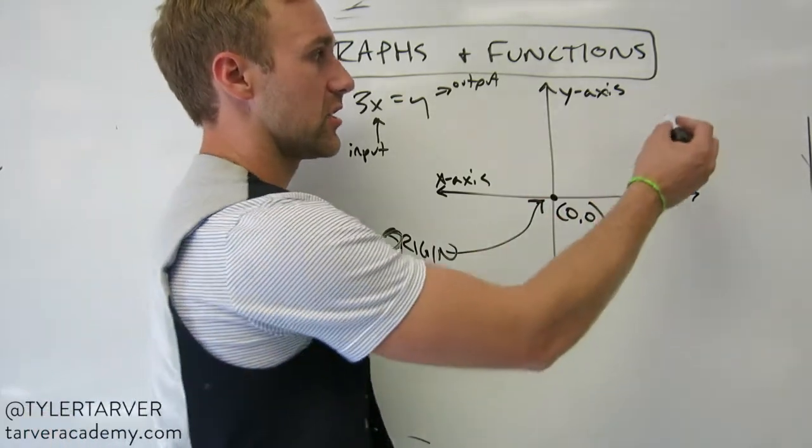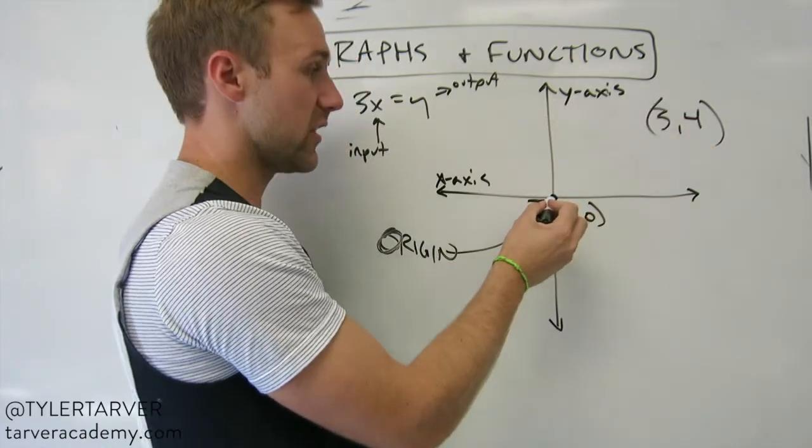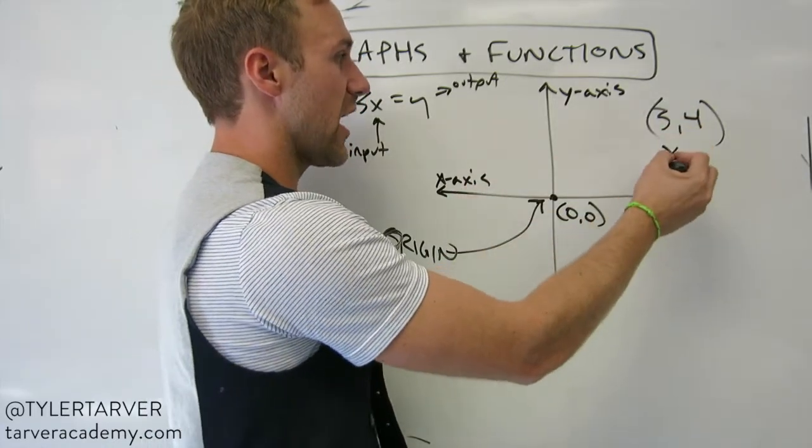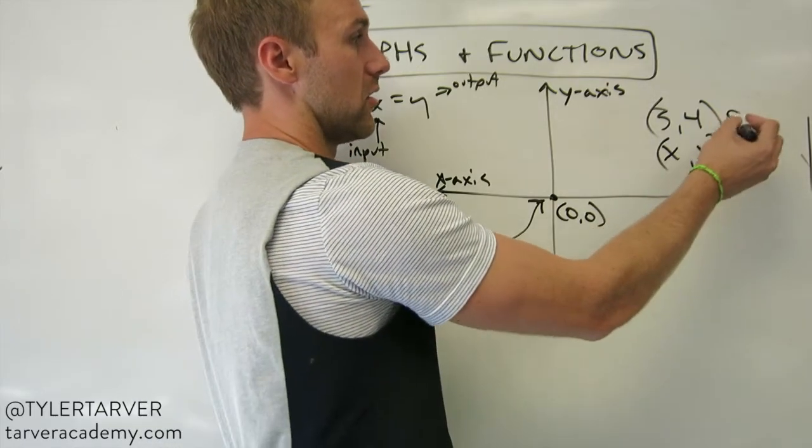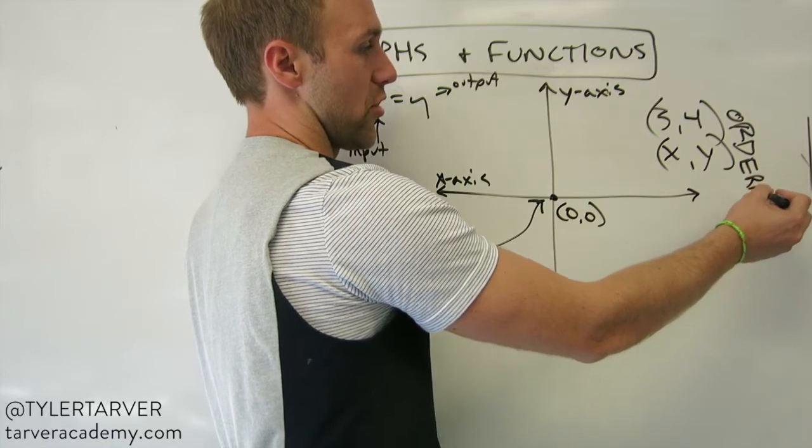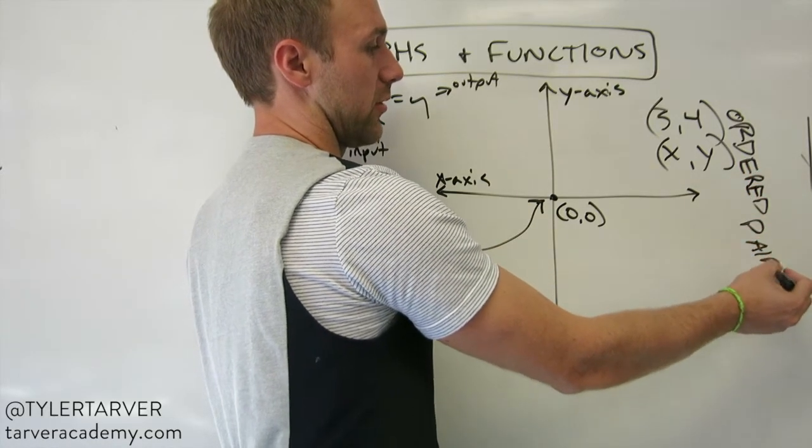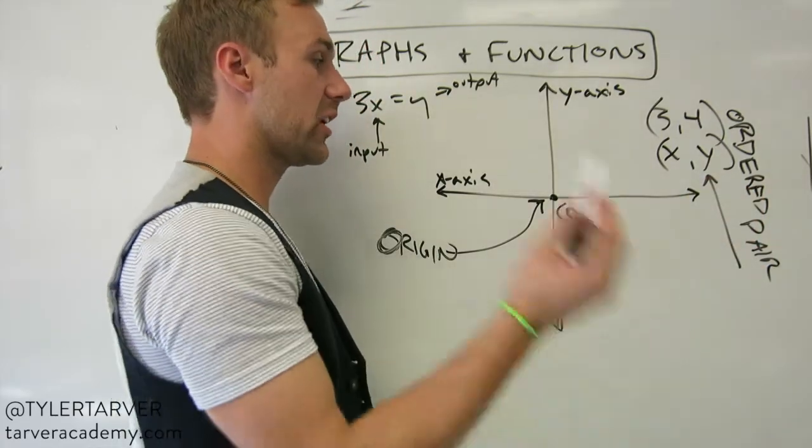Anytime you have a coordinate, say you've got 3, 4, you start at your origin and then you count. First one is your x. Second one is your y. That is called an ordered pair. An ordered pair is an x and a y value, an input and an output.